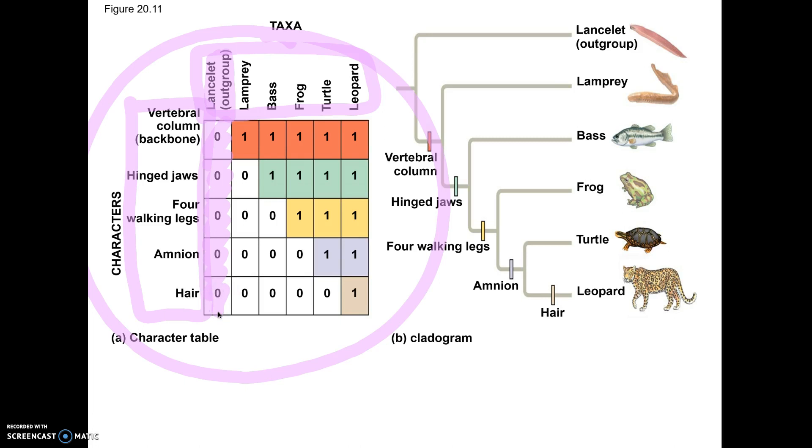He would be called the outgroup. It's possible the outgroup has one trait, but whoever you list first, whoever is the most primitive, like this one right here, here's our lancelet, that's considered your outgroup.